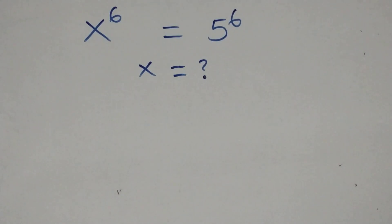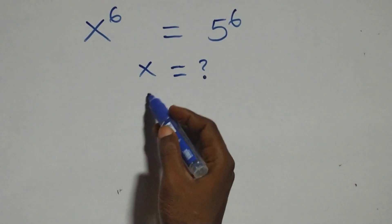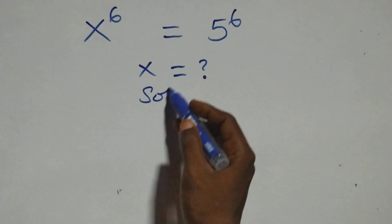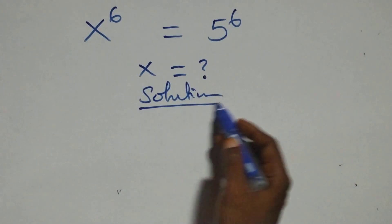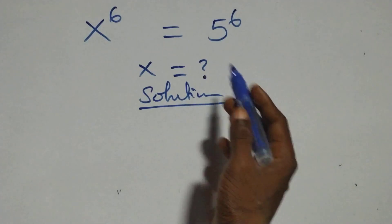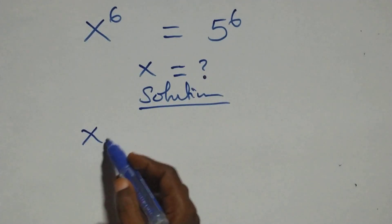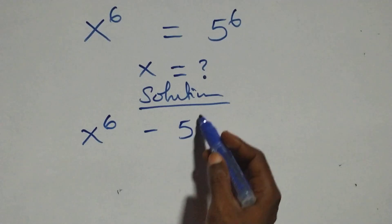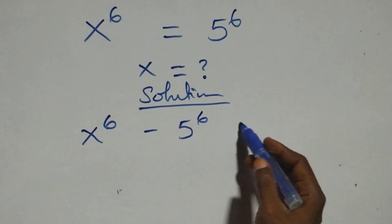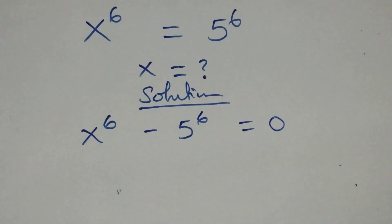Hello, you are welcome. How to solve this nice exponential equation? From what we have here, we take 5 raised to power 6 to the left hand side and we have x raised to power 6 minus 5 raised to power 6 equals to 0.